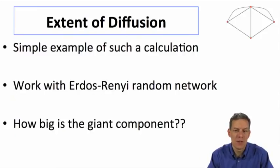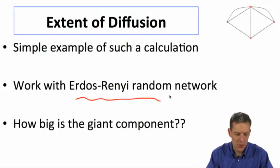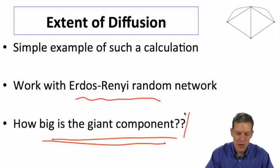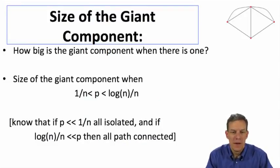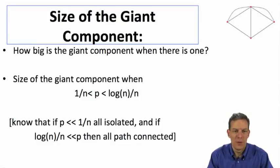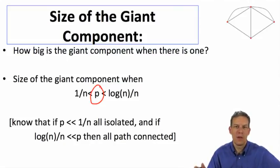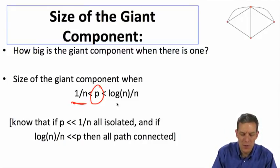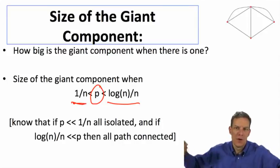What we're going to do is a simple example of such a calculation, and we'll start by working with an Erdos-Renyi style random network. The main question we're going to be answering is just what can we say about how big the giant component is in such a network. So how big is a giant component if there is one? Let's think about GNP as our starting model. The size of the giant component is going to be interesting when P is in the range where the giant component isn't so small that it doesn't exist or so large that we have almost full connection. So the interesting region is going to be when P is somewhere between 1 over N and log N over N.